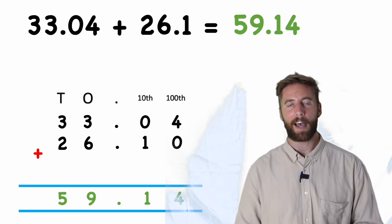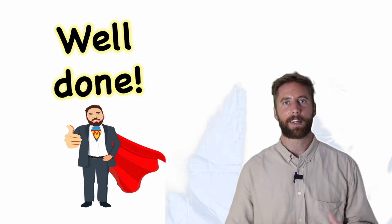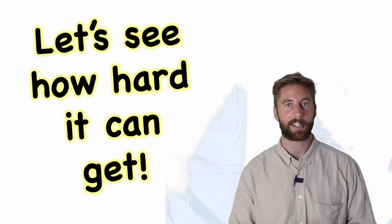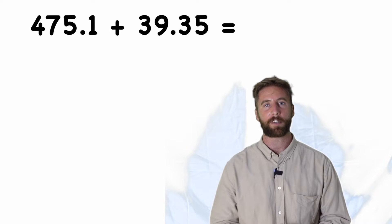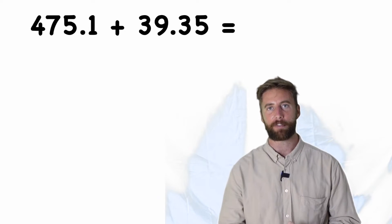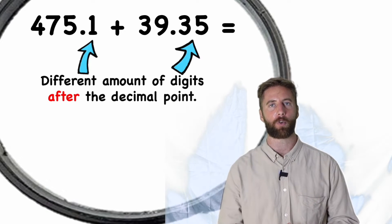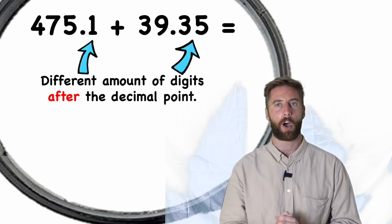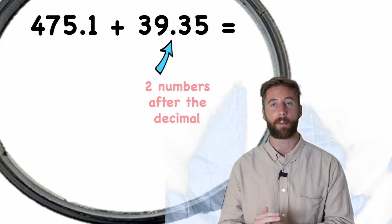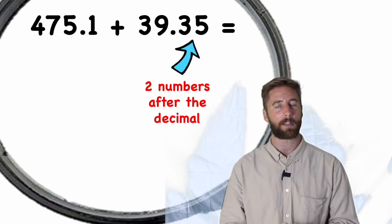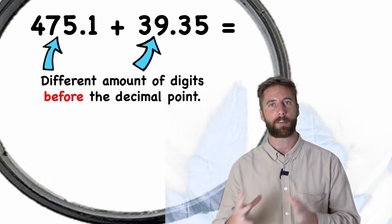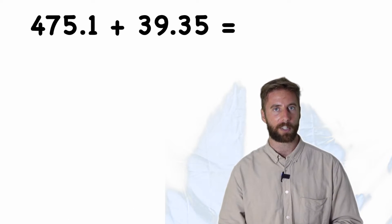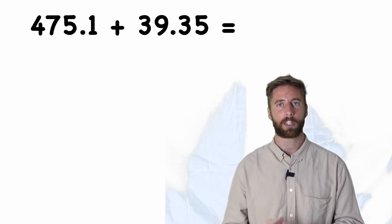If you can do that and understand that, you are an amazing year five mathematician. Now I'm going to show you as hard as this can get — the hardest stage three we can possibly get. What if I gave you the question four hundred and seventy-five point one add thirty-nine point three five? I can see we have a different amount of digits after the decimal place, and also different amounts of digits before the decimal place. In four hundred and seventy-five I have three digits, and in thirty-nine I have two digits before the decimal. So we're going to need more placeholders this time, and I can also see that we're going to have to carry some of these columns.